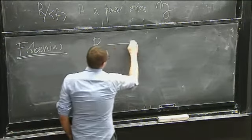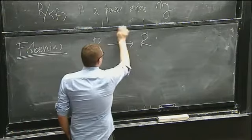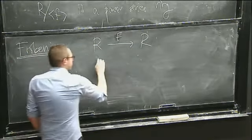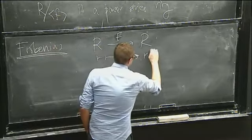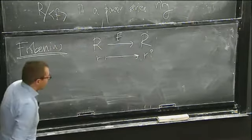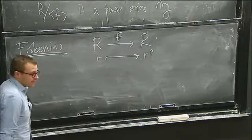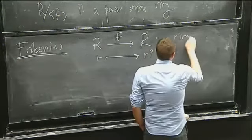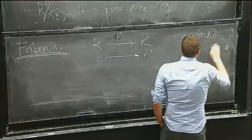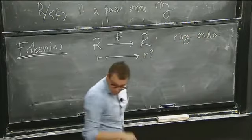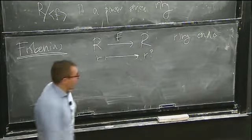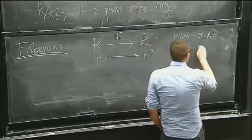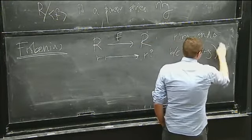The Frobenius endomorphism, which you're likely familiar with, is just the p-th power map on the elements of the ring. The point here is that this is a ring endomorphism. The freshman's dream holds, as they say.